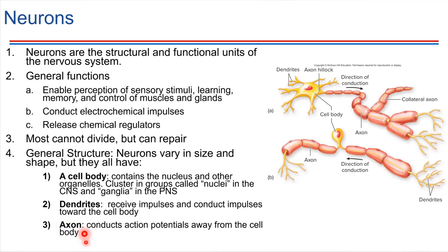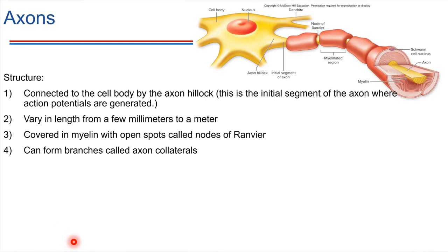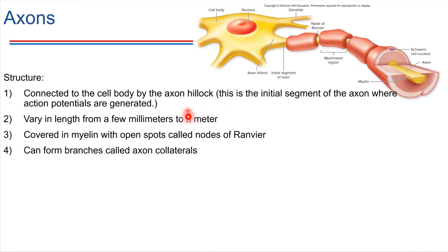Let's focus in on the axons for just a minute. There's a connection point to the cell body, and then beyond that, the length of the axon is variable from one neuron to another. There are some neurons where the axon is pretty short, just a few millimeters. But there are other neurons where the axon would be very long — if you consider a neuron that runs the length of your leg, there's actually one axon that goes from the base of your spinal cord all the way down to your toes. These are cells that can be up to a meter in length.